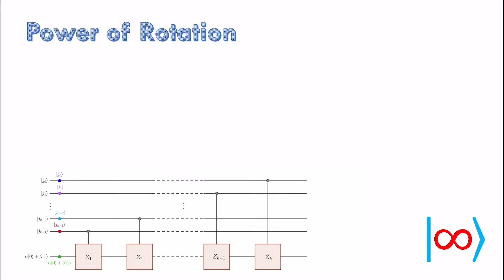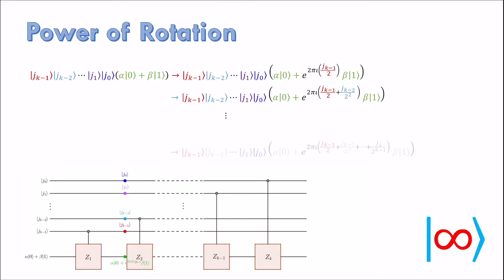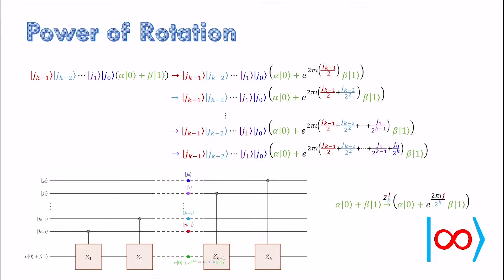Now that we can implement controlled rotation, we can revisit the problem of computing any desired power of Z_k rotation. We use bits of j as controls for appropriate z rotations. Although order is not important, first the most significant bit j_k-1 is control for Z_1 rotation. This rotates the state 1 by the angle 2 pi j_k-1 by 2. This idea is then followed by other bits with rotation such that we get j by 2 power k as required in the phase. This idea is a significant step in our ability to implement quantum Fourier transform.